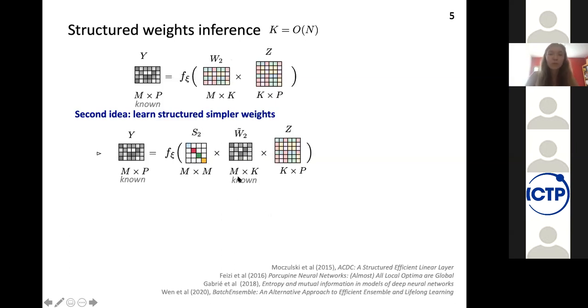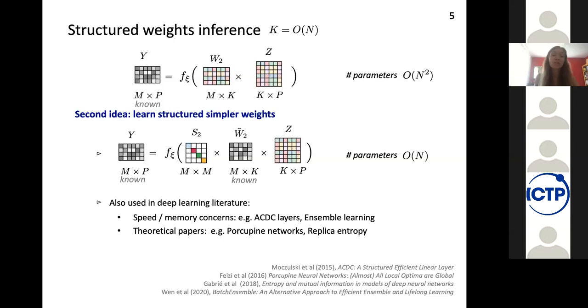So, of course, by doing so, we are losing something because we used to have order of N squared parameters in the second layer. And now we only have order of N. Nevertheless, it's a model that has been considered in the literature before, both in practical papers where the concern was about speed or memory, or in other theoretical papers where this simplification was easing some theoretical computations.